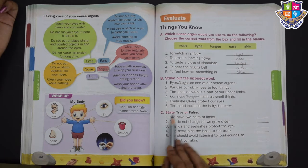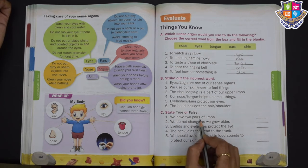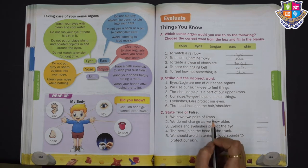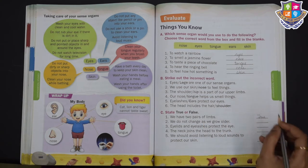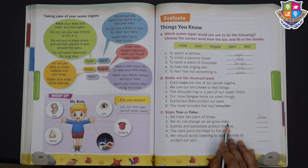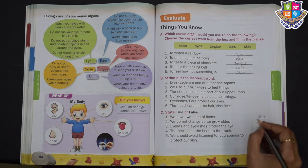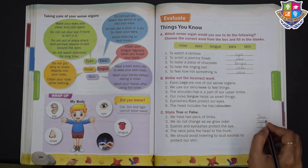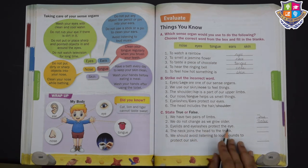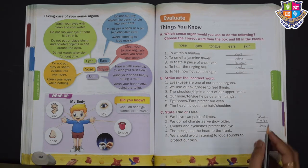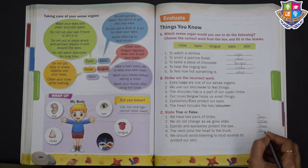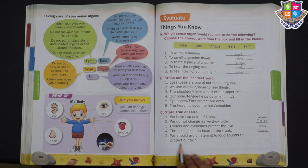Now state true or false. We have two pairs of limbs — true. We do not change as we grow older — false, we do change. Eyelids and eyelashes protect the eye — true. The neck joins the head to the trunk — true. We should avoid listening to loud sounds to protect our skin — false.